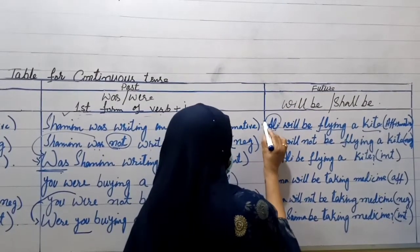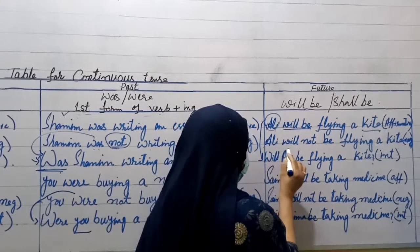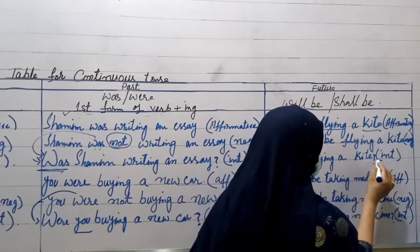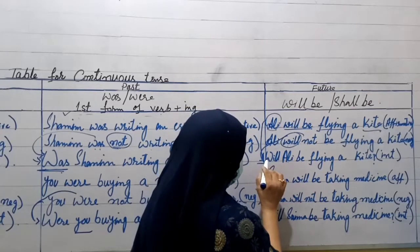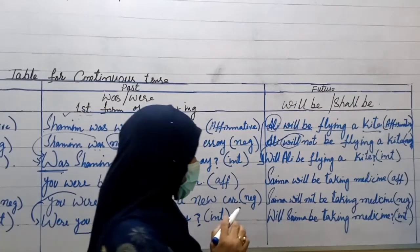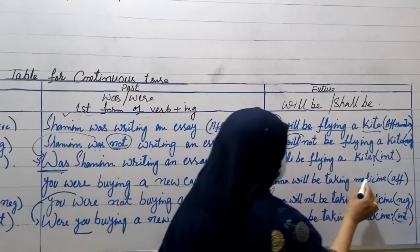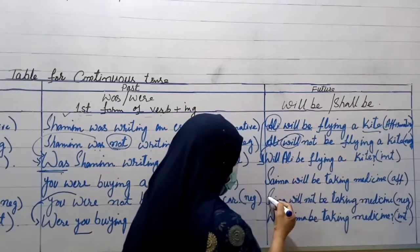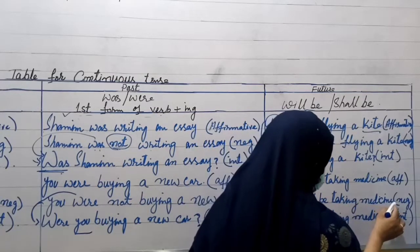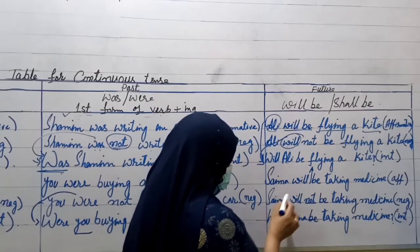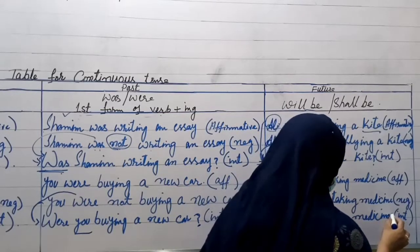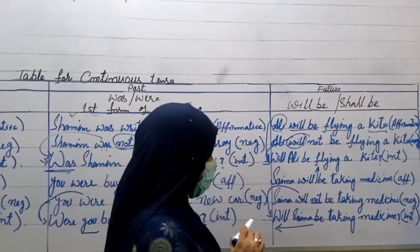To change the same sentence into interrogative, the helping verb comes at the beginning of the sentence: 'Will Ali be flying a kite?' with a question mark at the end. Second example: 'Simon will be taking medicine.' This is affirmative. For negative, put 'not' in between 'will' and 'be': 'Simon will not be taking medicine.' For interrogative: 'Will Simon be taking medicine?' with a sign of interrogation.